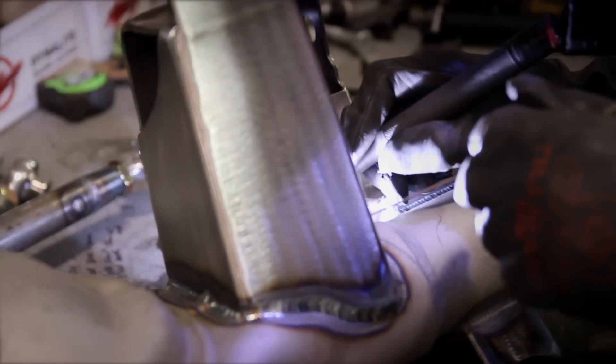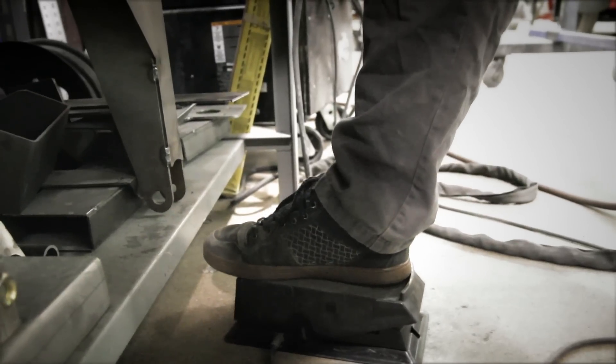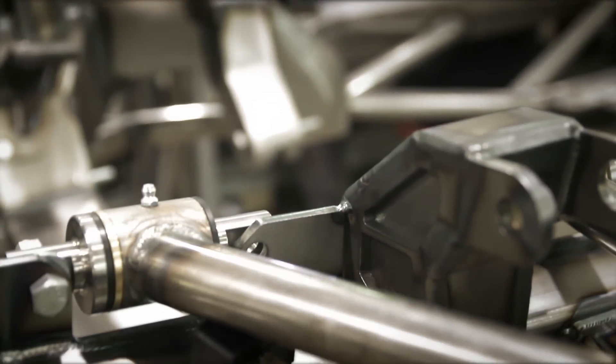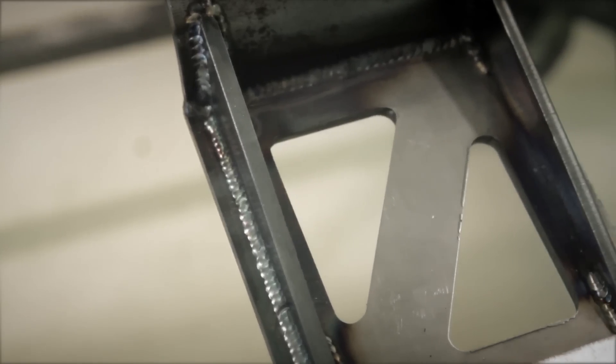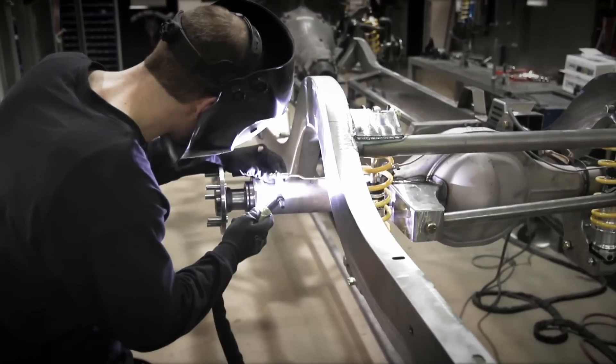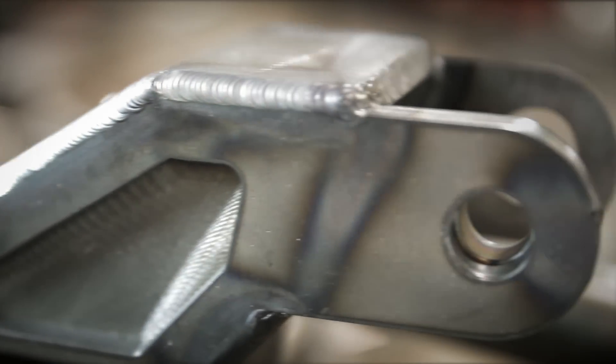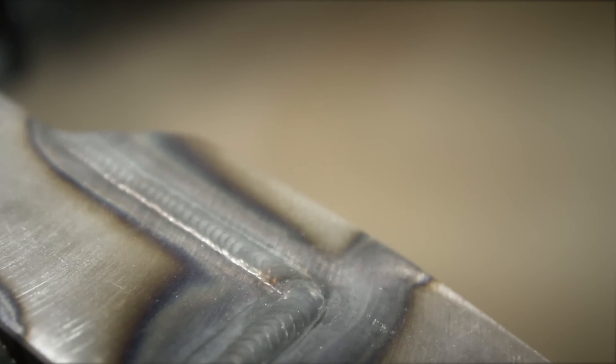We TIG weld every component on the chassis. TIG welding takes longer, it's harder to do, but at the same time it's a better weld, it's got deeper penetration, it's visually more appealing and when it comes time to do the paint body work side of the frame it's a lot easier to work with.